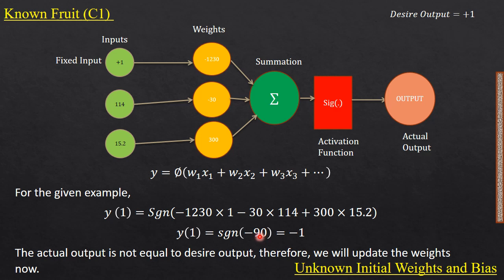We are using the sign function as the activation function. The sign function states that if x is less than or equal to zero, we obtain minus 1. This means our actual output is minus 1, but our desired output is plus 1. Since the actual output is not equal to the desired output, we need to update the weights.